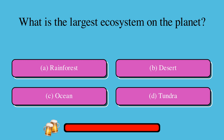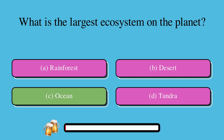What is the largest ecosystem on the planet? A. Rainforest, B. Desert, C. Ocean, or D. Tundra? The correct answer is C. Ocean.